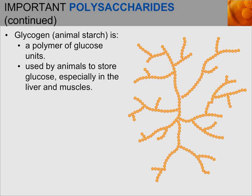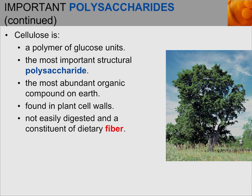Another important polysaccharide is glycogen, also referred to as animal starch. It is also a polymer of glucose units and is used by animals — including humans — to store glucose, especially in the liver and muscles. Another important polysaccharide is cellulose, also a polymer of glucose units. It is a key structural polysaccharide and the most abundant organic compound on earth, found in plant cell walls and giving plants their structure.